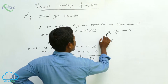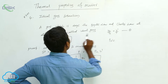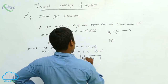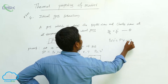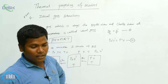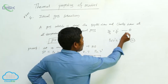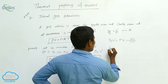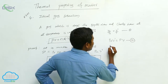V by T is equal — this is from Charles' law. Then P times V dash is equal to P0 V0 — this is from Boyle's law. These two laws are obeyed, and only then we can say it is an ideal gas.